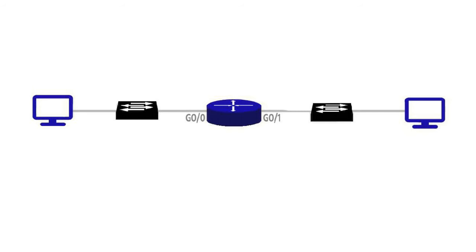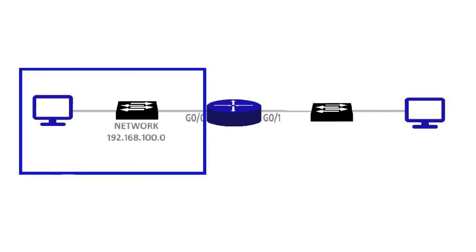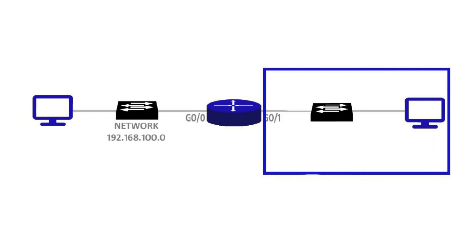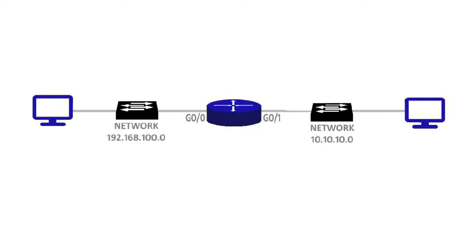For the network on the left, we're going to use a private range of IP addresses in the 192.168.100.0 network, or subnet. For the network on the right-hand side, we're going to use the private IP addresses in the 10.10.10.0 network or subnet. Two different private networks that we're connecting together over this router. Each one of our hosts already has specific assigned IP addresses and each of their NICs — their network interface cards — already has specific MAC addresses.